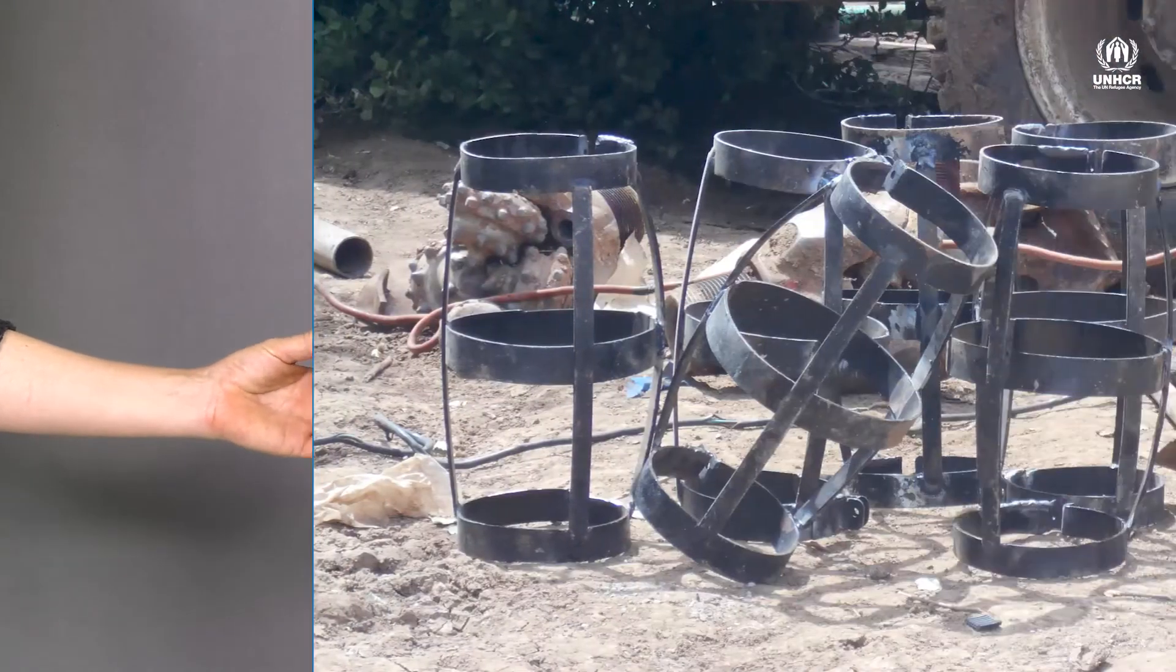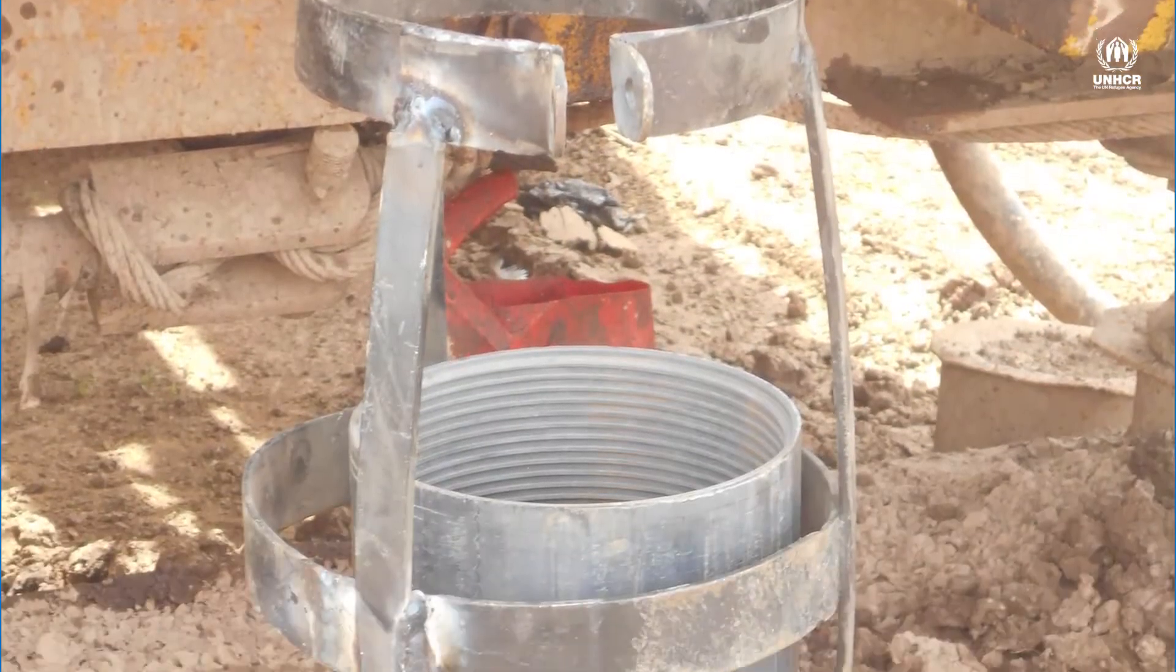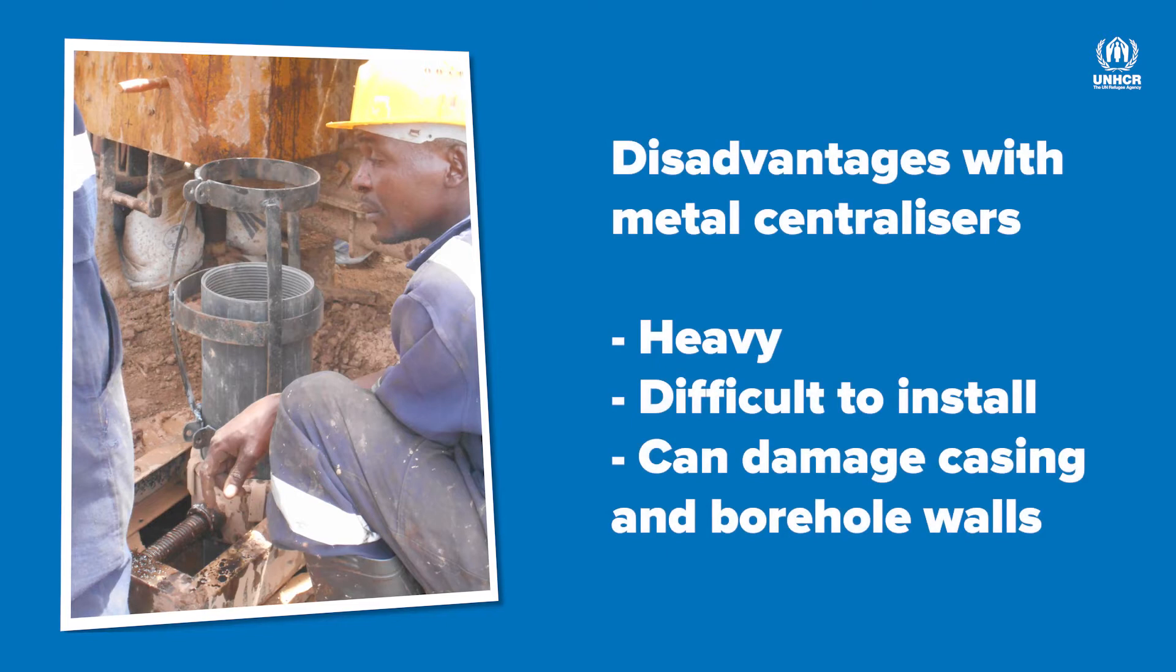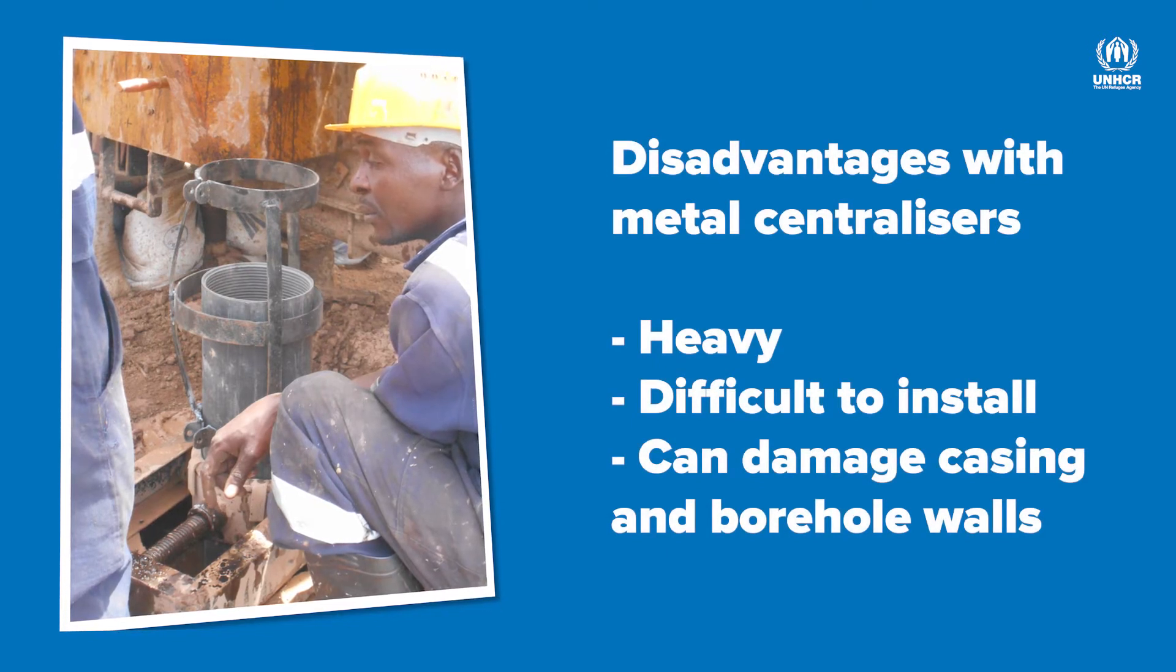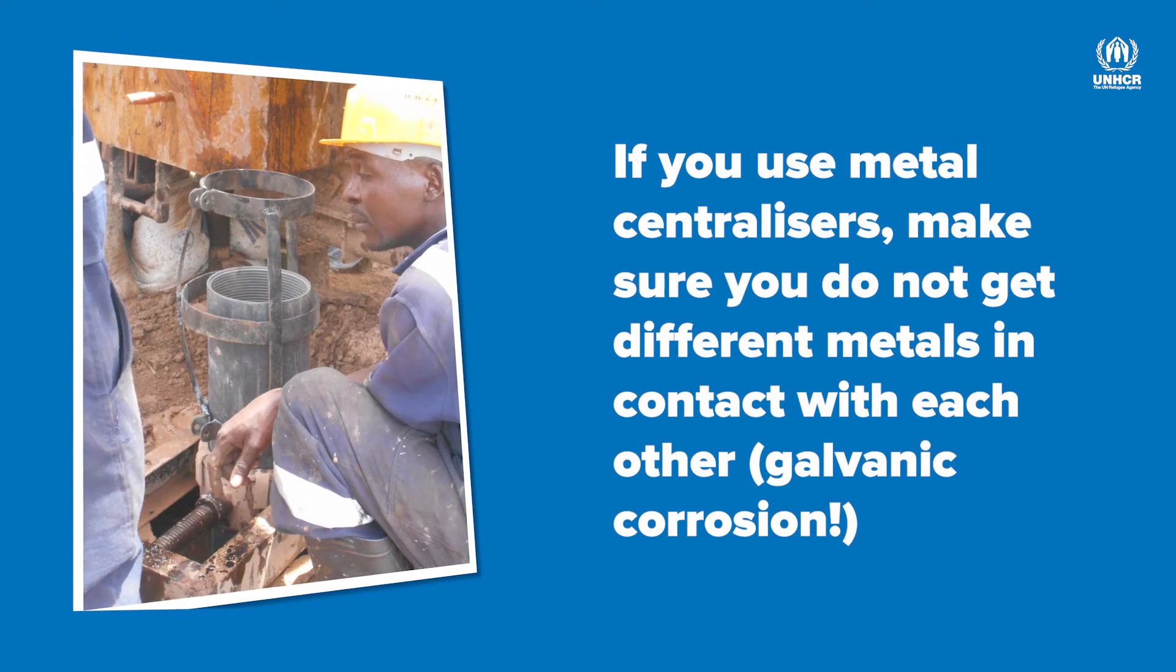And what about the metal ones, then? Metal centralisers are heavy. They can be difficult to install and can even cause damage to the casing and borehole walls. They're only really used in deep installations with steel casing. If you're using metal centralisers, make sure that they are made of the same material as the casing to avoid preferential corrosion.